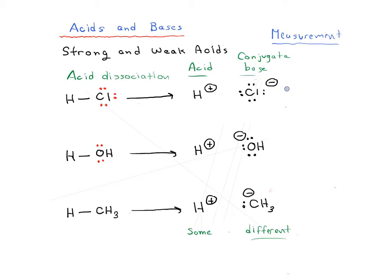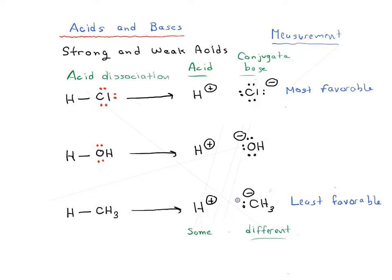As we do the measurements of these reactions, it turns out that of these three reactions, this one is the most favorable — the most likely to give H plus and Cl minus. And of all these reactions, this one is the least favorable, the least likely to give H plus and CH3 minus. Which is interesting, because all we're really changing here is the identity of the conjugate base. H plus stays the same throughout.